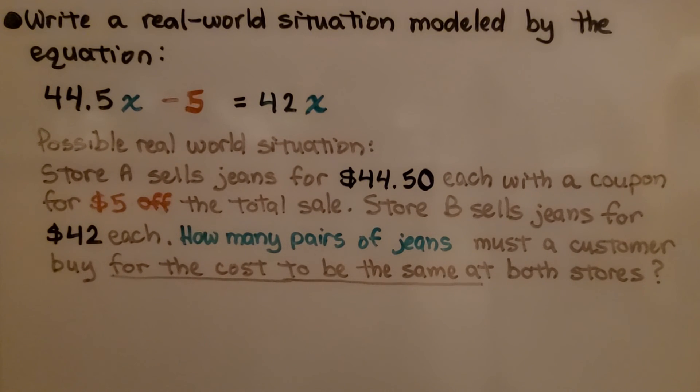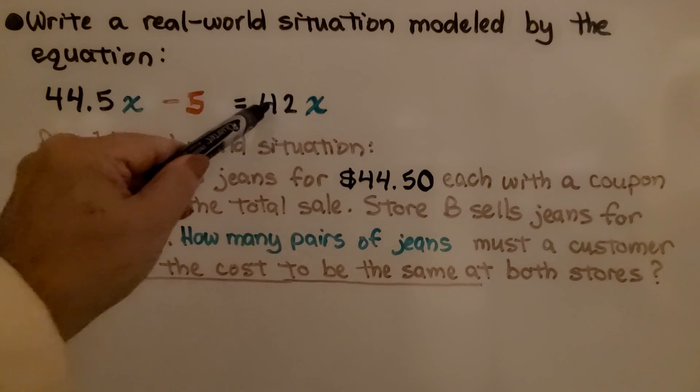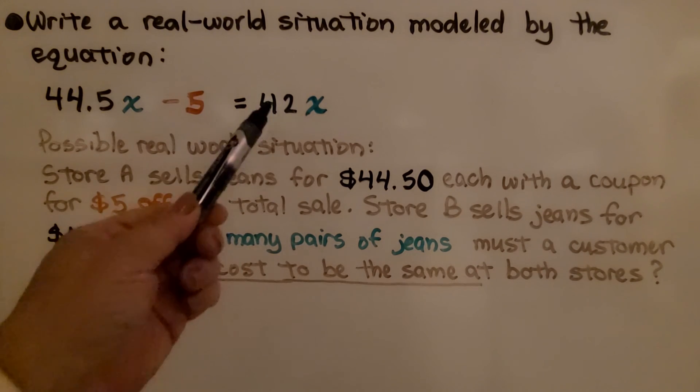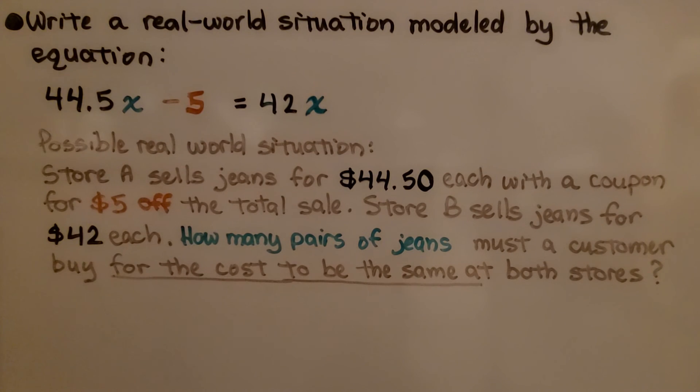Here it's asking us again to write a real-world situation modeled by the equation 44.5x minus 5 equals 42x. We can write these as money amounts. A possible real-world situation could be Store A sells jeans for $44.50 each with a coupon for $5 off the total sale. Store B sells jeans for $42 each. How many pairs of jeans, that would be our x, must a customer buy for the cost to be the same at both stores?